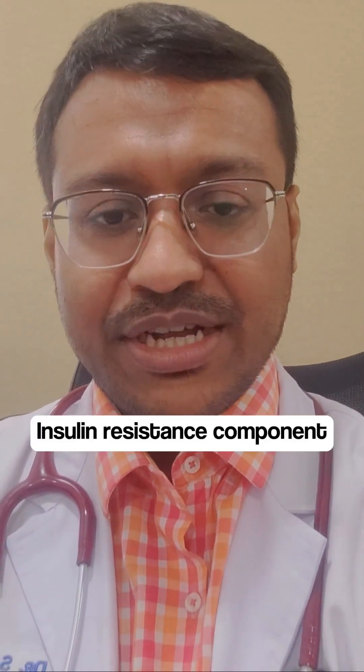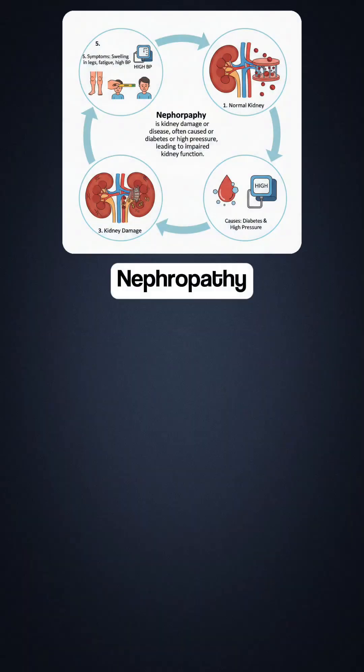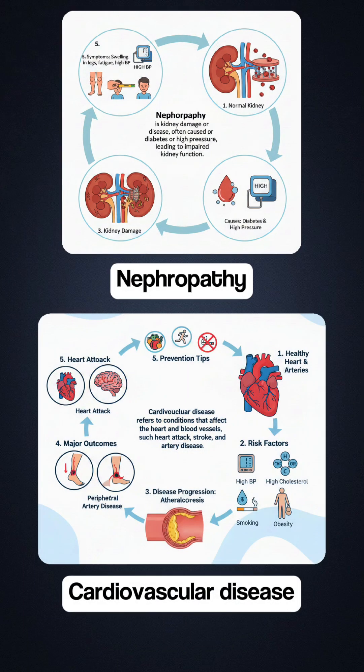Type 2a, as they have described it, mainly concerns the insulin resistance component, wherein you will find patients who are more obese, have a more atherogenic profile, and are at much higher risk of complications such as nephropathy or cardiovascular disease.